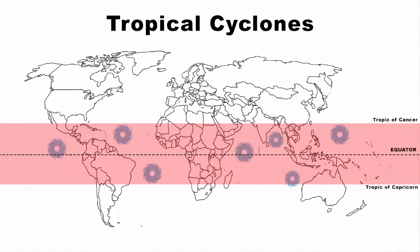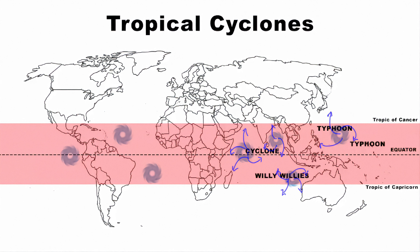Tropical cyclones are known by different names depending on the region. In the Indian Ocean, they are known simply as cyclones. If you go to the western Pacific side or near the South China Sea, they are called typhoons. Near Western Australia, they are known as willy-willies. All these are different names referring to the same type of storm.